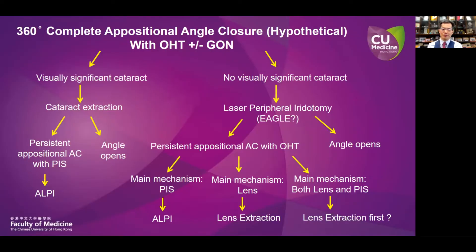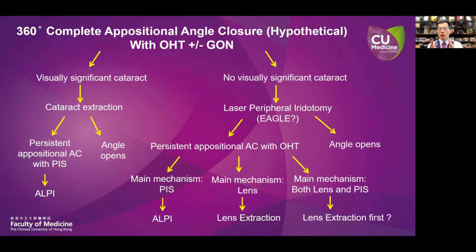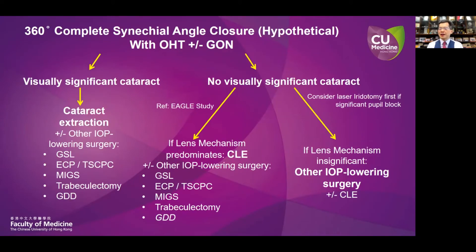In my other talk at this meeting, I've covered a management algorithm for primary angle closure disease, and I've separated the clinical scenarios into two hypothetical situations at the two extreme ends of the clinical spectrum. In the interest of time, I'm not going to go through all these scenarios again, but suffice to say that in a lot of situations, we would have to decide whether it is plateau iris or the lens being the main mechanism leading to angle closure. If it is plateau iris syndrome, we consider argon laser peripheral iridoplasty, whereas if it is the lens being the main mechanism, we consider lens extraction. Sometimes lens extraction alone may not be enough and we have to combine it with other IOP-lowering surgery.